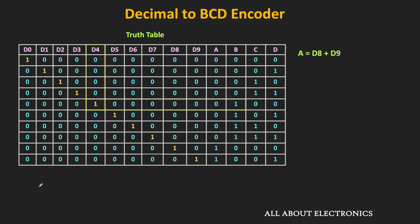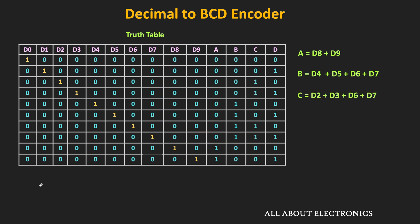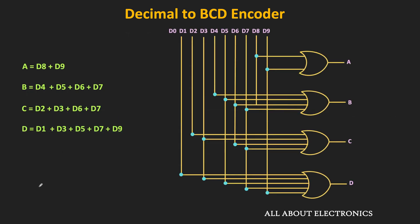Output B is high when D4, D5, D6, or D7 is high, giving the expression B = D4 + D5 + D6 + D7. Output C is high when D2, D3, D6, or D7 is high, so C = D2 + D3 + D6 + D7. The logical expression for output D is D1 + D3 + D5 + D7 + D9. These four expressions can each be implemented with OR gates, giving us the complete OR logic circuit of the decimal-to-BCD encoder.